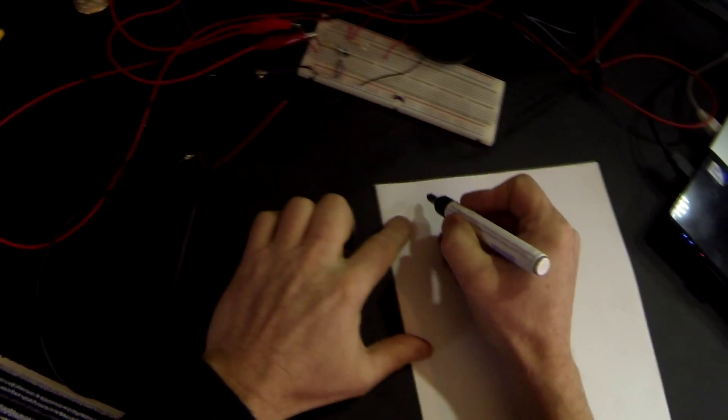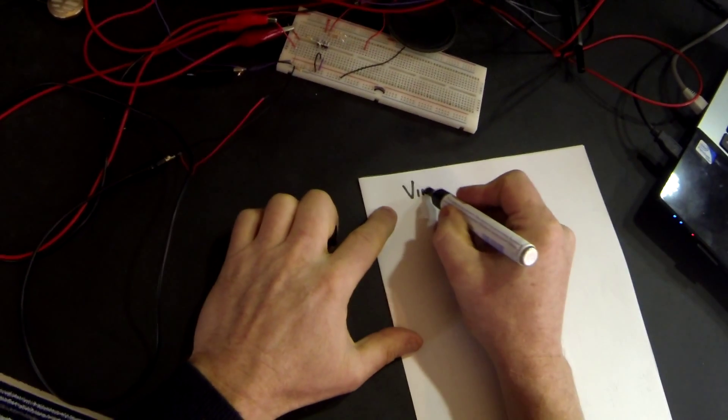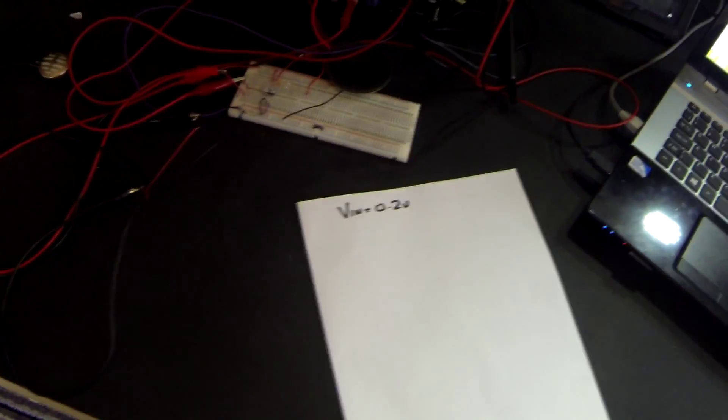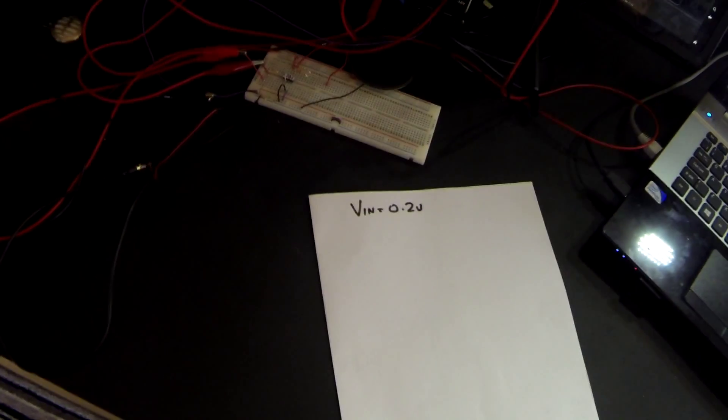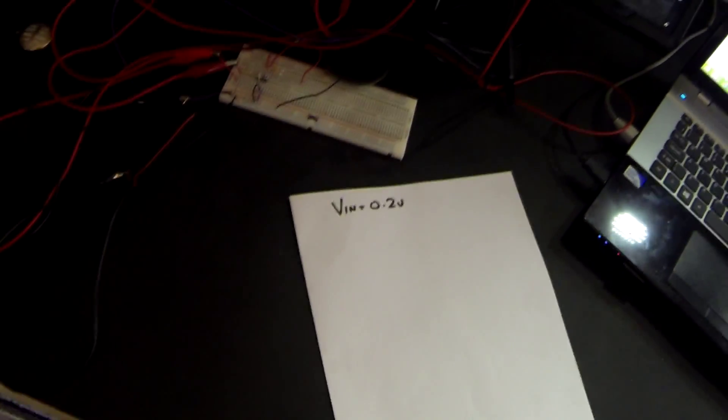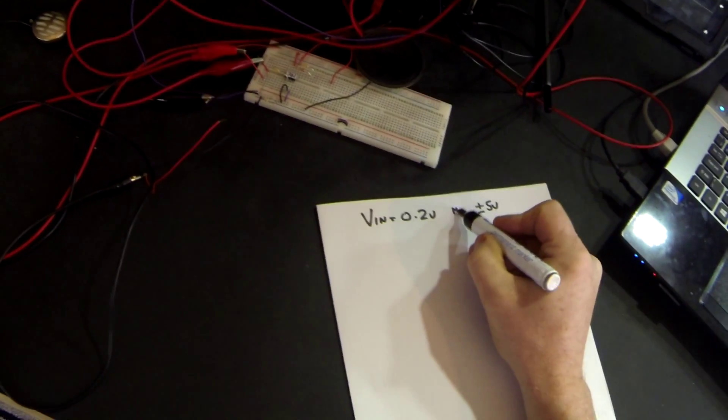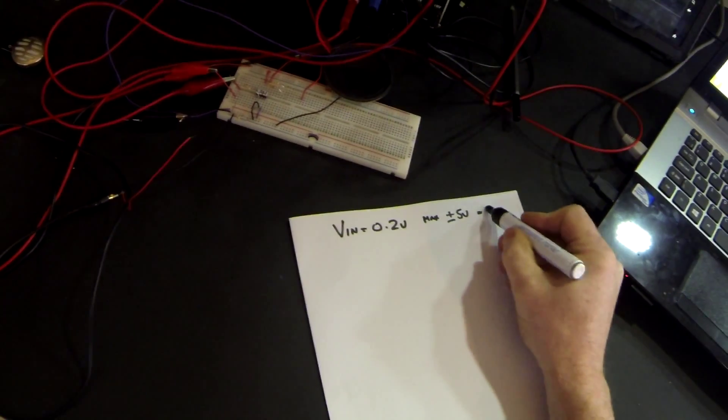First of all we know that the output of our microphone from the previous activities showed that it had a 0.2 volt signal and we know that in our amplifiers using a plus and minus 5 volt power supply our maximum voltage we can get out therefore must be 10 volts.